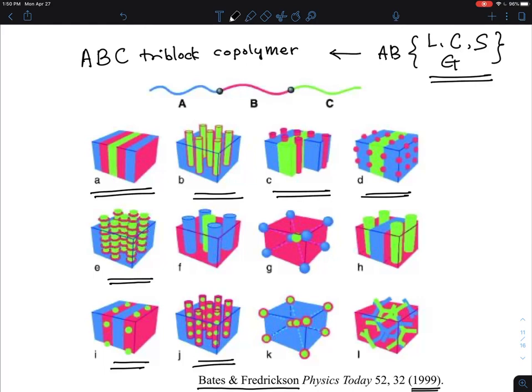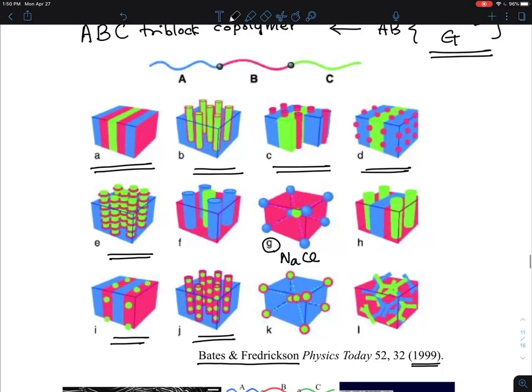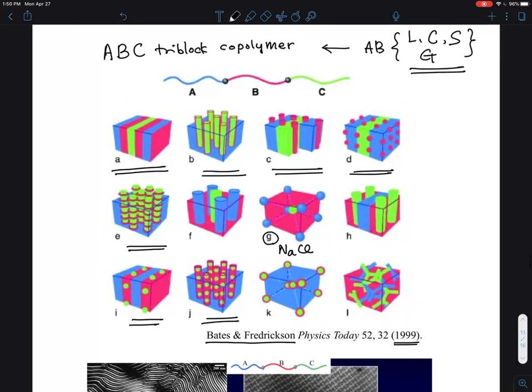They actually talk about some kind of generic ordered structures. If you look at G, this is very similar to sodium chloride rock salt structures. They start to argue about complex morphology, and many groups are still pursuing this route.